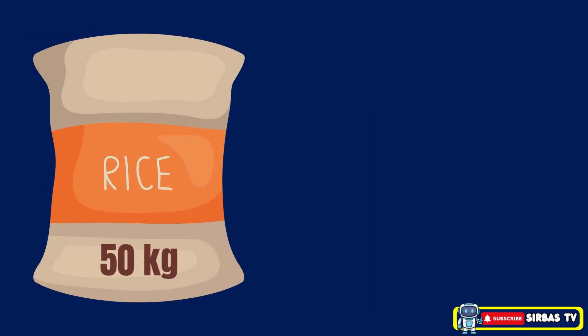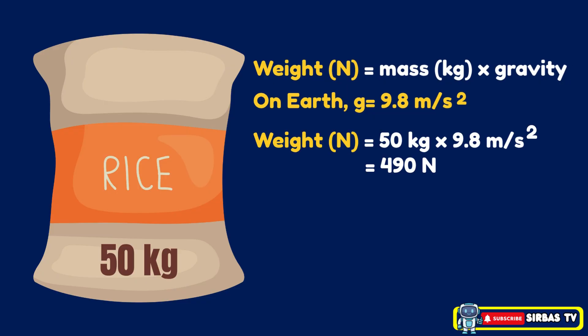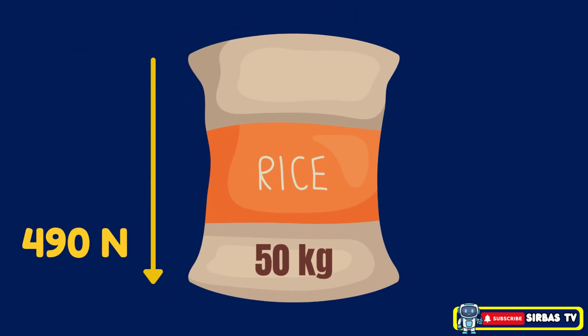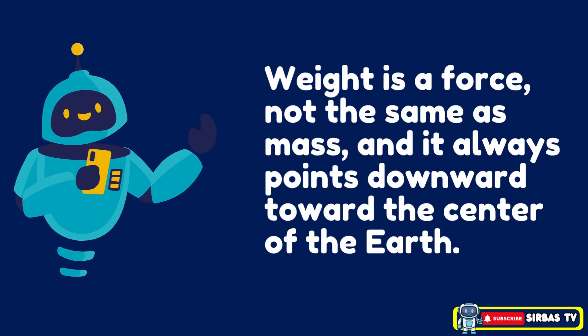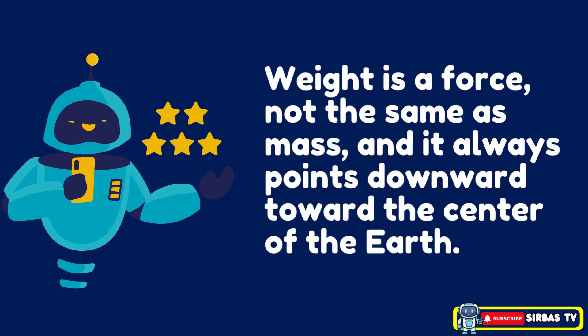For example, if you have a sack of rice with a mass of 50 kg, you can calculate its weight using the formula: weight equals mass times gravity. On Earth, gravity is about 9.8 meters per second squared, so the calculation is: weight equals 50 kg times 9.8 meters per second squared, giving a weight of 490 newtons. This means the bag of rice exerts a downward force of 490 newtons due to gravity. Remember, weight is a force — not the same as mass — and it always points downward toward the center of the Earth.